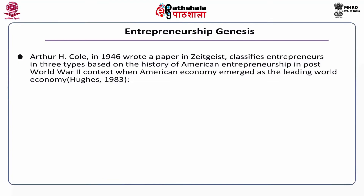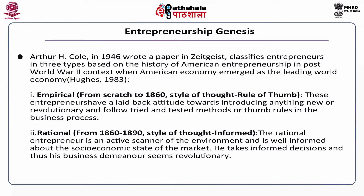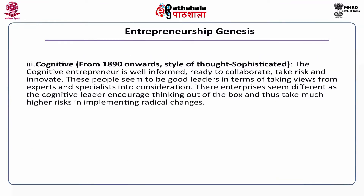Arthur H. Cole, in 1946, classified entrepreneurs into three basic types based on the history of American entrepreneurship in the post-World War Two context when the American economy emerged as the leading world economy. The first type is empirical (from scratch to 1860), with a style of thought based on rule of thumb. These entrepreneurs have a laid-back attitude towards anything new and follow tried and tested methods. The second type is rational (from 1860 to 1890), where the entrepreneur is an active scanner of the environment, well informed about the socio-economic state of the market, taking informed decisions that make his business seem revolutionary.